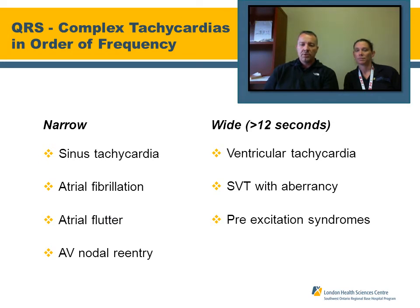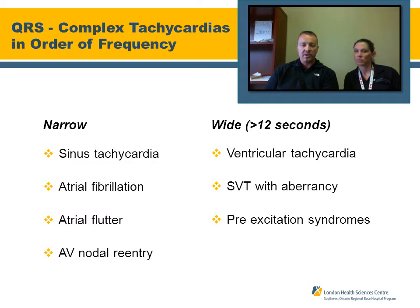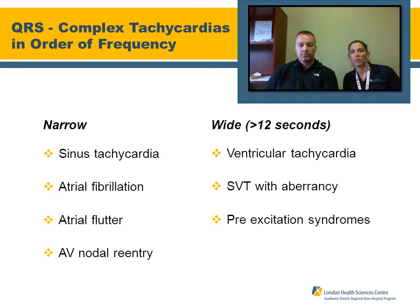Regarding QRS complex width for tachycardic rhythms, narrow complex rhythms include sinus tachycardia, atrial fibrillation — though atrial fib can be wide with aberrancy, QRS greater than 120 milliseconds — atrial flutter, AV nodal re-entry, and the treatable ones: SVT and PSVTs. Wide rhythms, defined as greater than 0.12 seconds or greater than three small boxes on the ECG, include V-tach, SVT with aberrancy, and pre-excitation syndromes.